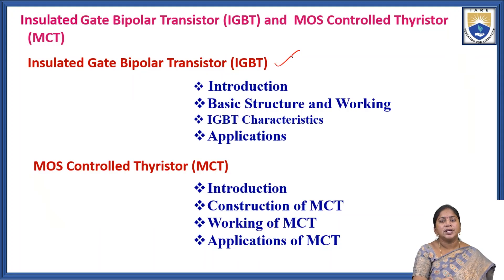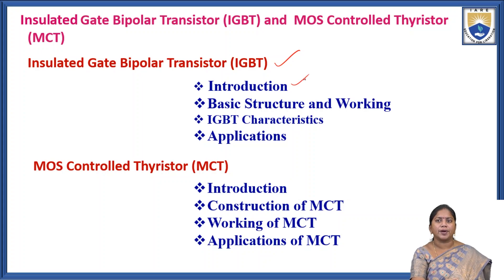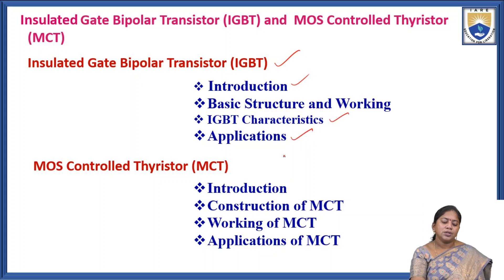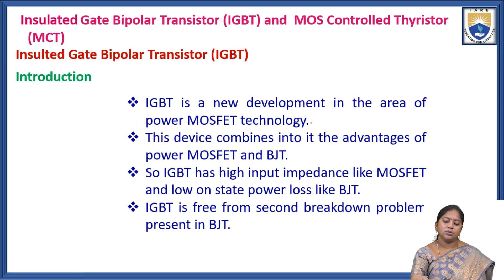Today's topics are Insulated Gate Bipolar Transistors, commonly known as the IGBT, and MOS Controlled Thyristor. For IGBT, we will discuss the introduction, basic structure and working, IGBT characteristics, and applications. For MCT, we will discuss the introduction, construction, working, and applications of MCT.